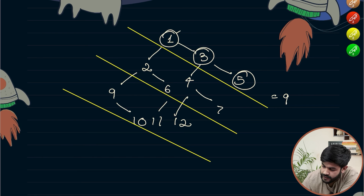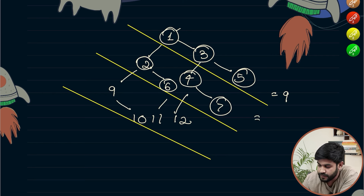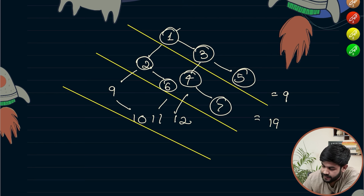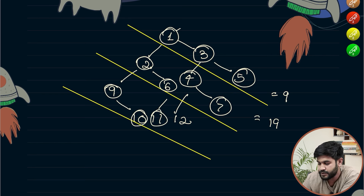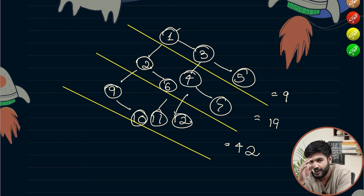The second diagonal contains two, six, ten, and seven: two plus six plus ten plus seven equals nineteen. The third diagonal has nine, ten, eleven — nineteen plus eleven is thirty, and thirty plus twelve equals forty. So you need to print all the diagonal sums.